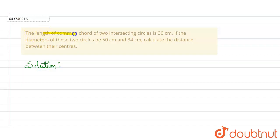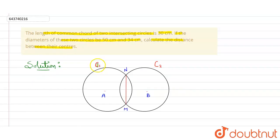In this question, it is given that the length of the common chord of two intersecting circles is 30 centimeters. The diameter of these two circles is given as 50 centimeters and 34 centimeters. We need to calculate the distance between their centers. Let's draw the figure — suppose these are two circles C1 and C2, and MN is the common chord.